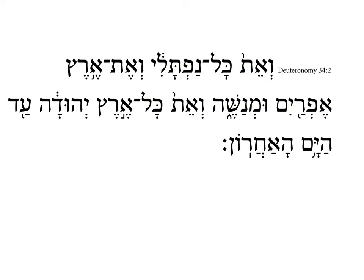I'd like to work with a pronunciation issue. The word kol appears twice. One of the tricks early on is when you have a qamets qaton or a qamets, it's telling the difference between the two. The dictionary form of the word kol comes with a holam, so it has that O sound.